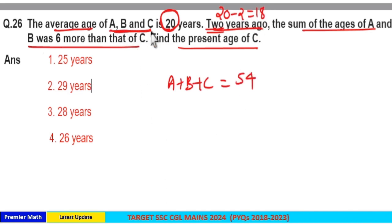That is, presently average of A, B and C is 20 years means sum of ages of A, B and C presently is equal to 20 into 3, 60 years.